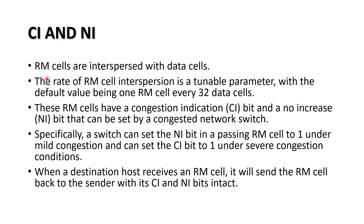CI and NI bits are set by switches inside the network. The rate of RM cell interspersion is a tunable parameter — by default, one RM cell per 32 data cells. If the CI bit is 1, there is congestion. The NI bit set to 1 means there should be no increase in sending rate. Specifically, a switch can set the NI bit to 1 in a passing RM cell under mild congestion, and set the CI bit to 1 under more severe congestion.